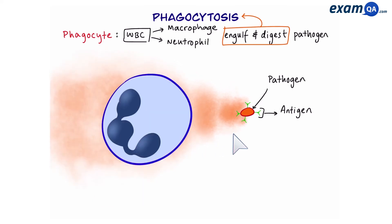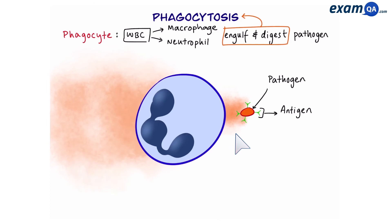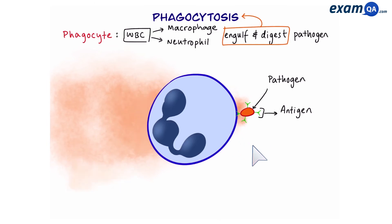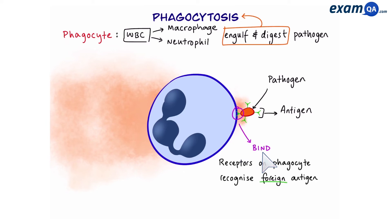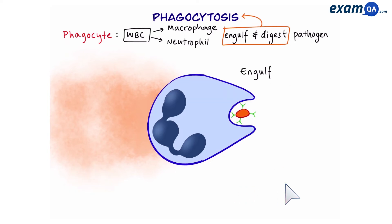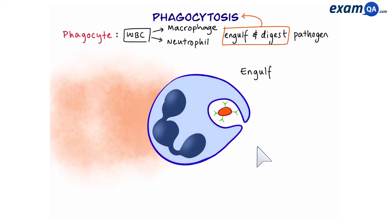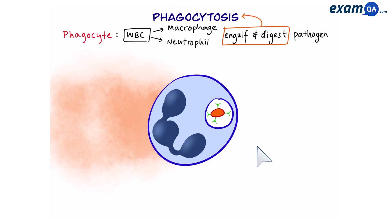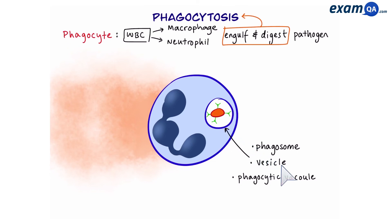The phagocyte moves closer and closer towards the pathogen until they touch. The phagocyte binds to the pathogen and receptors on its surface recognize the foreign antigen. Next, the white blood cell surrounds its cytoplasm around the pathogen and begins to engulf it — a process also known as endocytosis. Eventually it has fully consumed it and placed it into a ball known as a phagosome, or phagocytic vacuole, or vesicle — all three terms refer to the same thing.